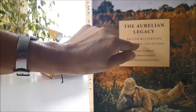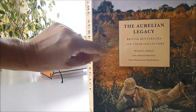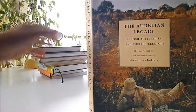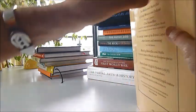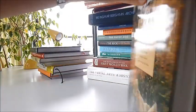The Aurelian Legacy, British Butterflies and Their Collectors by Michael Salmon, published at £30, and the bargain price through Bibliophilebooks.com is just £9.